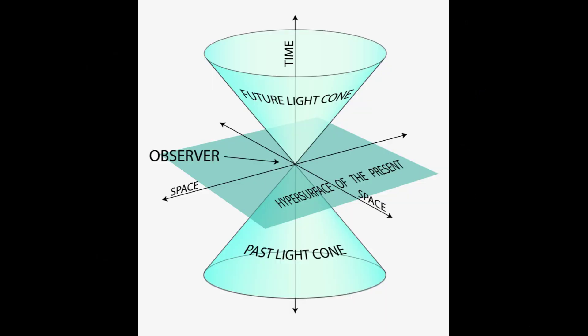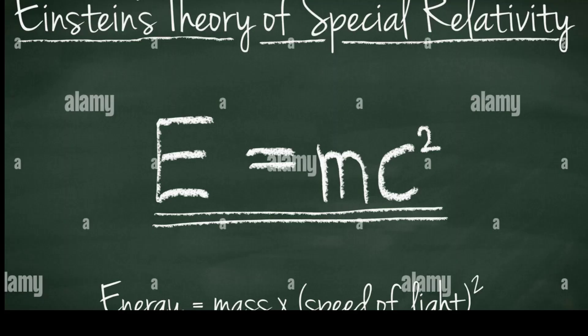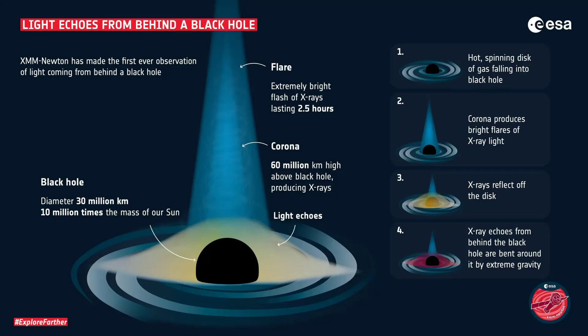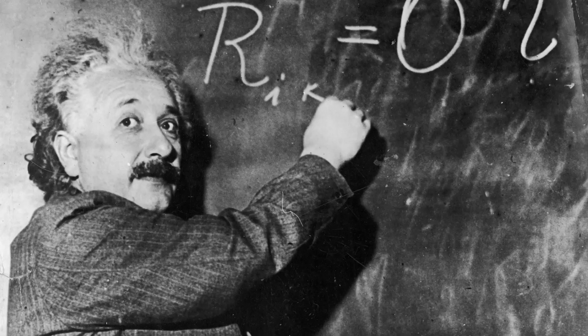Length contraction is the idea that objects in motion appear to be shorter in the direction of their motion. This means that if you were traveling close to the speed of light, objects in front of you would appear to be squished in the direction of your motion. This effect has also been observed in experiments involving high-speed particles.